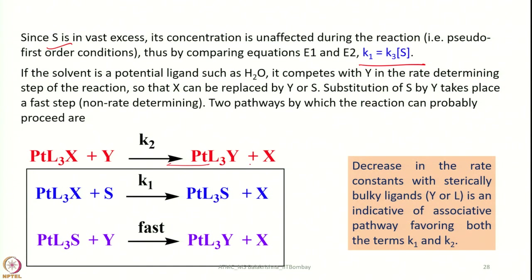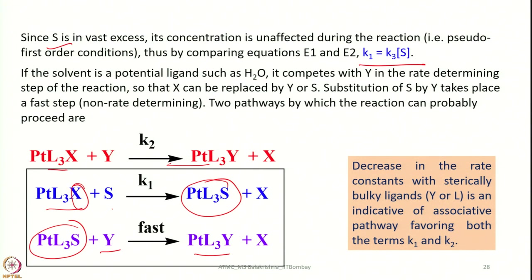Two pathways by which the reaction can proceed are: first, S enters and forms an intermediate, which then reacts with Y to give the product. The decrease in rate constants observed with sterically bulky ligands Y or L is indicative of an associative pathway, which favors both terms k1 and k2. Steric factors must account for ligands already present on the metal as well as the steric bulk of the entering ligand Y. A decrease in rate constant with bulky ligands clearly indicates the associative pathway.